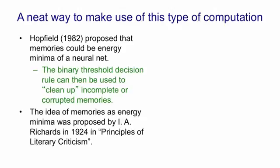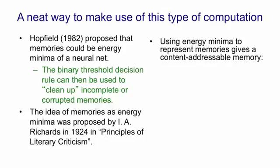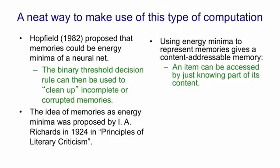The idea of memories as energy minima goes back a long way. The first example I know of is in a book called Principles of Literary Criticism by I.A. Richards where he proposes that memories are like a large crystal that can sit on different faces. Using energy minima to represent memories gives a content addressable memory as Hopfield realized. You can access an item just by knowing part of its content. I can tell you a few properties of something, that'll set the states of some of the neurons in the net, and if you've put the other neurons in random states and now go around applying the binary threshold rule, with a bit of luck you'll fill out that memory to be some stored item that you know about.